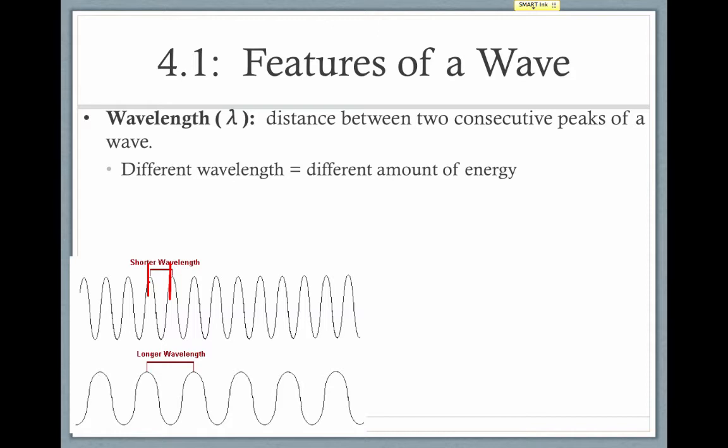Up top, we have a shorter wavelength than the one down the bottom, because these peaks of these waves are further apart, so they have a longer wavelength. Different wavelengths correspond to different amounts of energy. More on that in a minute.